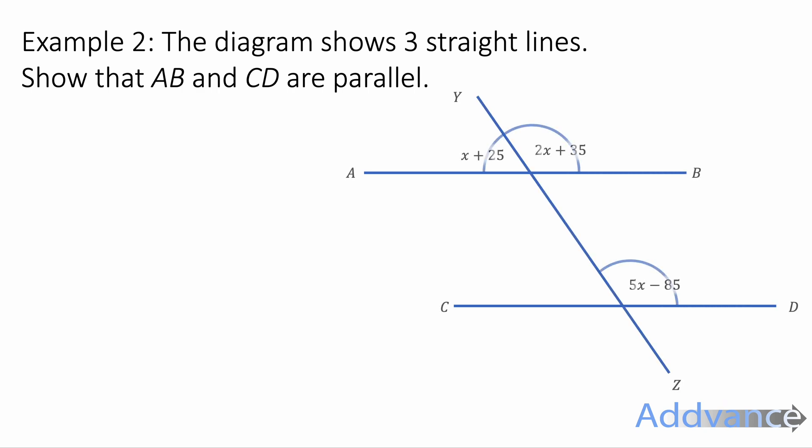OK, let's look at example 2. The diagram shows three straight lines. AB and CD are parallel. Show that AB and CD are parallel. So AB is this line and CD is this line, and we're trying to show that they are parallel.